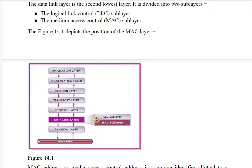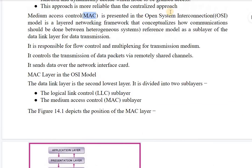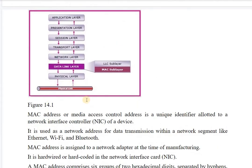The OSI reference model data link layer contains two sub-layers: LLC (Logical Link Control) and MAC (Media Access Control). The MAC sub-layer provides protocols to solve problems of which computer should get access to the channel and at what time. It is also responsible for flow control and multiplexing of the transmission medium, controls transmission of data packets via remote shared channels, and sends data over the Network Interface Card. The data link layer deals with MAC addresses, Ethernet addresses, or NIC card addresses.